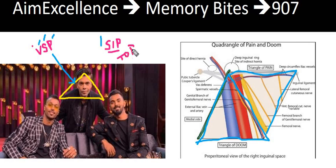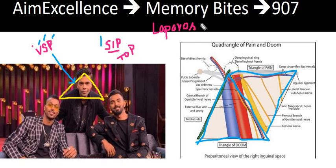Now why is it important? It is very important for the surgeon who is going to do laparoscopic hernia repair. This is taken from Schwarz 10th edition. In the triangle of doom there are important nerves and vessels — both nerves and vessels are present there.